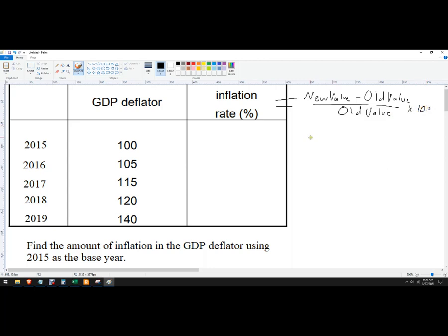And this also works for CPI, so if these weren't GDP deflator values they were the consumer price index or the producer price index, that would also work.